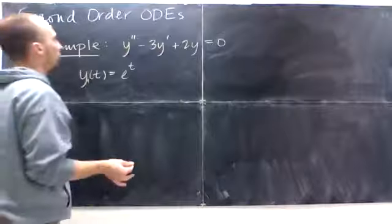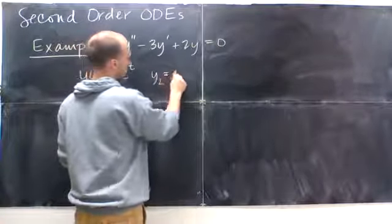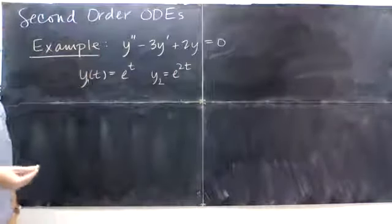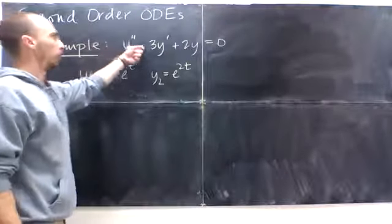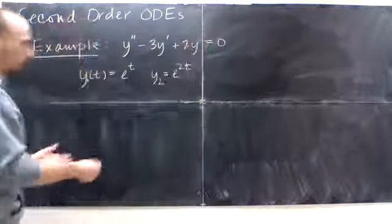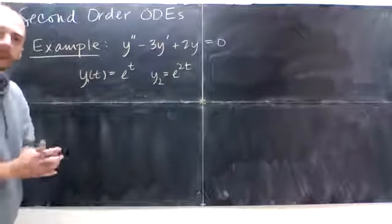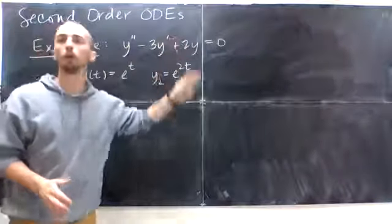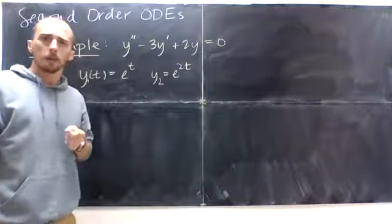But then there's also y equals e to the 2t. I think I'd let you check on your own that y equals e to the 2t satisfies that. That would be 4e to the 2t minus 6 plus 2 e to the 2t's. It's going to go to zero. It's like, how did I come up with that? And maybe you see how I came up with that. Really, if we look at this as kind of like a polynomial, the roots of that polynomial are going to give us the numbers that go up here.